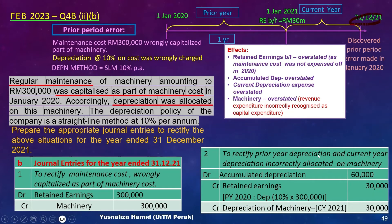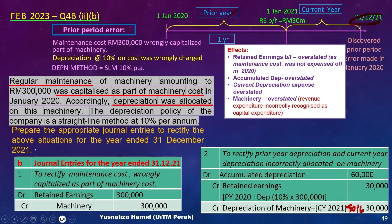Next, rectify the prior year and current year depreciation wrongly allocated on the machinery. For the prior year 2020, depreciation was 10% per year — 30,000 — which must be removed from retained earnings brought forward as at 1st January 2021. For the current year, depreciation is removed from profit or loss. We credit the accumulated depreciation to remove the wrongly charged amount of 60,000 in total, which will reduce the carrying amount of the machinery and require adjustment in the PPE notes.